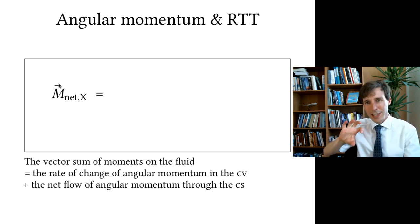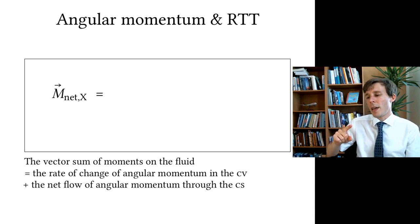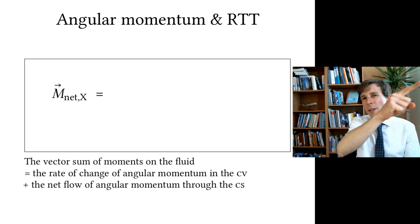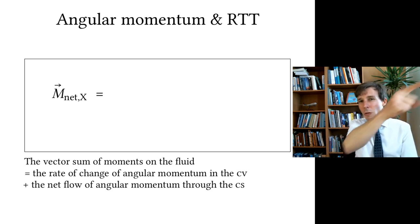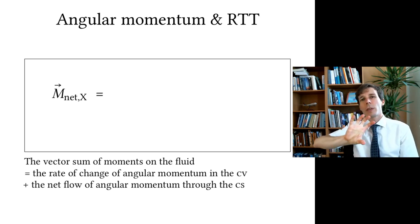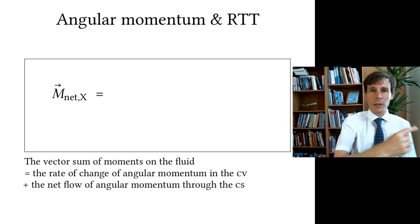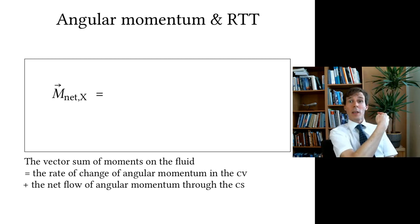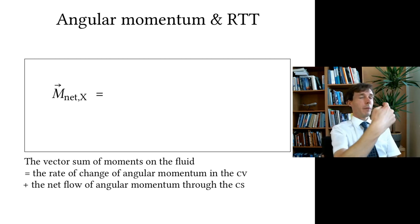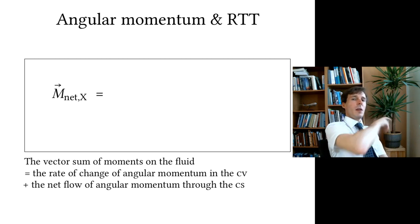By convention, the direction of the vector is such that if you look in that direction, you will see the moment twisting clockwise. A vector pointing from you to me corresponds to twisting one way, and from me to you corresponds to twisting the other way.